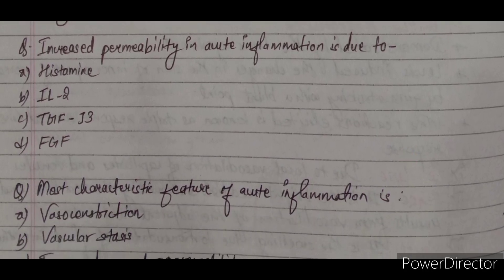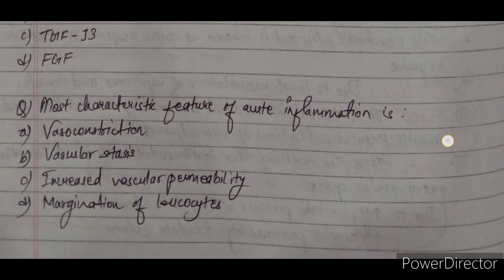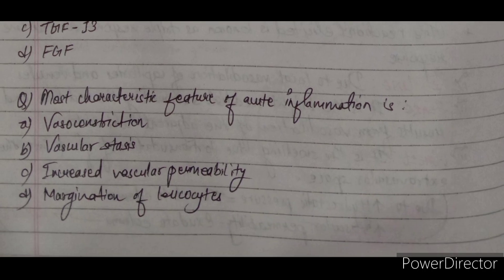Question 3: Increased permeability in acute inflammation is due to — A) histamine, B) IL-2, C) TGF-beta, D) FGF. The correct answer is B, that is IL-2. Question 4: Most characteristic feature of acute inflammation is — A) vasoconstriction, B) vascular stasis, C) increased vascular permeability, D) margination of leukocyte. The answer is C — increased vascular permeability, which is the most characteristic feature of acute inflammation.